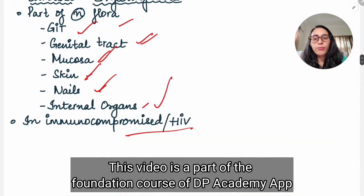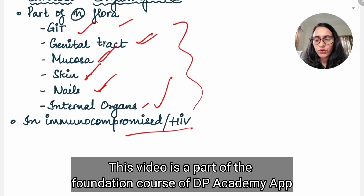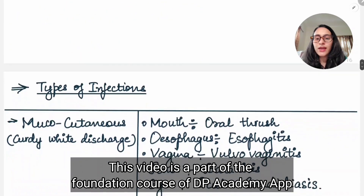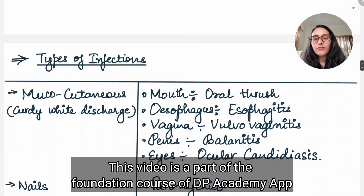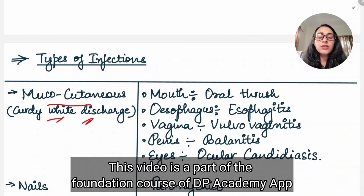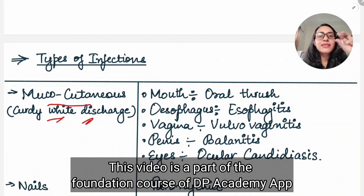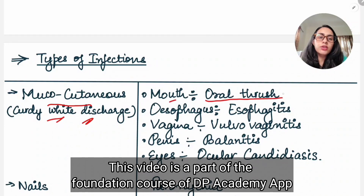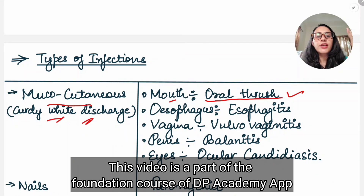What kind of infection is caused by Candida? Most commonly Candida albicans causes mucocutaneous infection, which presents as curdy discharge. In the oral cavity, you will find oral thrush — white color patches present on the buccal mucosa and on the tongue. If you try to scrape it, it can be scraped.